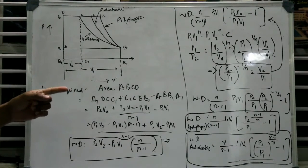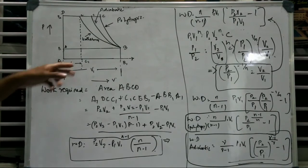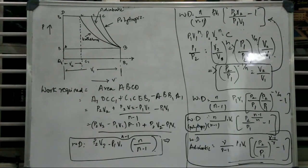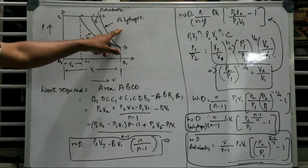Today we are going to talk about work done by a compressor for three different processes. One is isothermal, the other is adiabatic, and the third one is polytrophic.